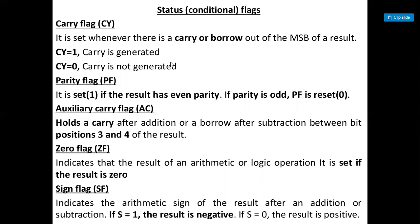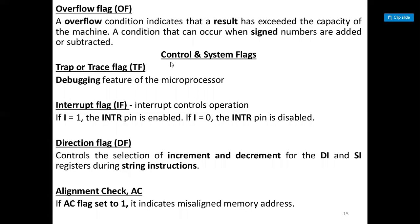The zero flag (ZF) indicates that the result of an arithmetic or logical operation is zero when set. The sign flag (SF) indicates the arithmetic sign after addition or subtraction: if 1, the result is negative; if 0, positive. The overflow flag (OF) indicates that the result has exceeded the capacity of the machine, which can occur when signed numbers are added or subtracted.